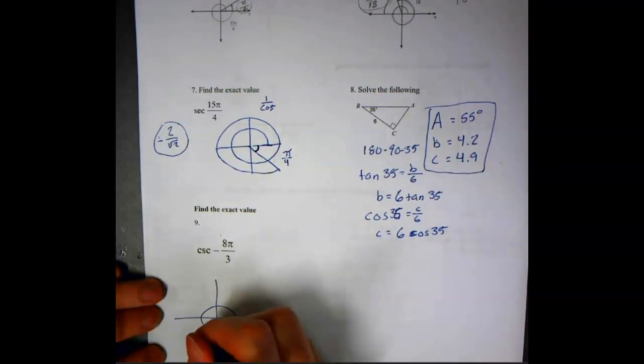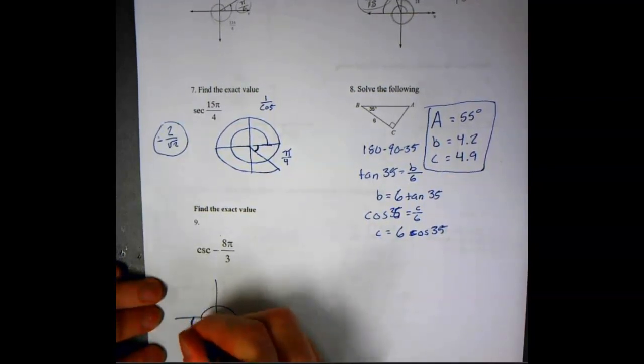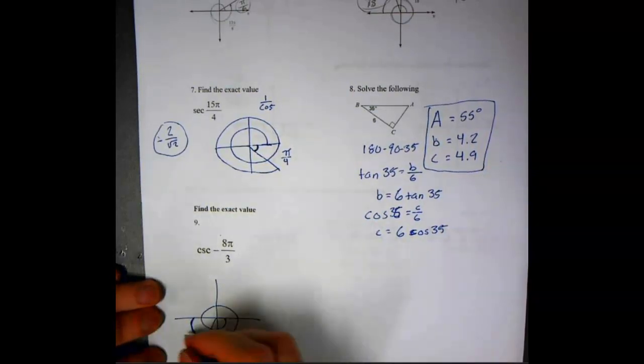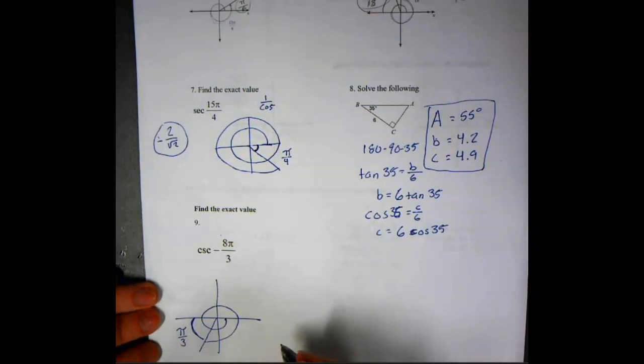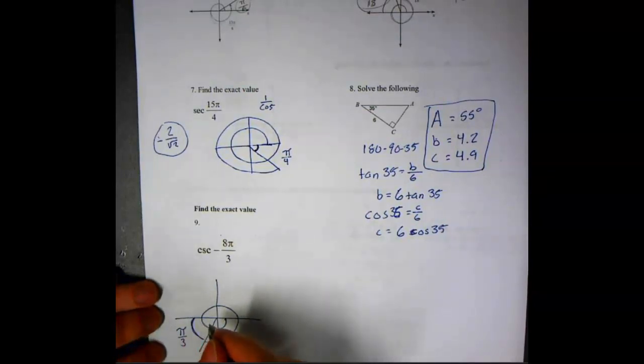And we're looking at this angle right here. That is pi over 3. We are in the bottom left quadrant. So quadrant 3.